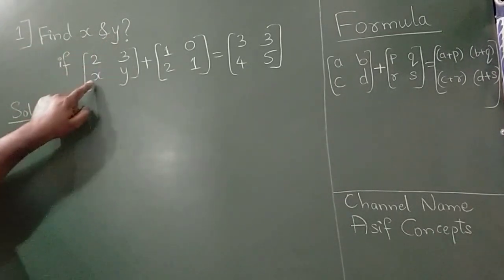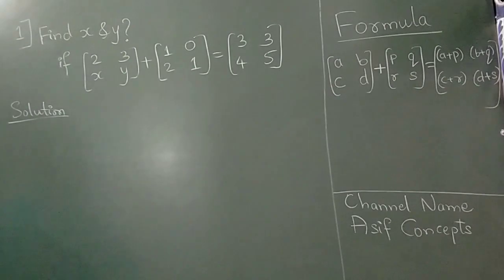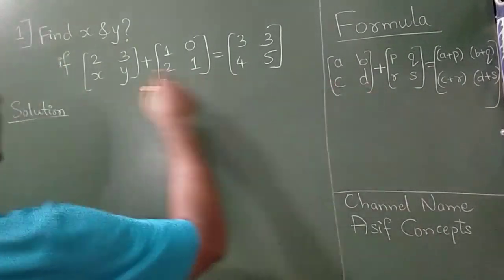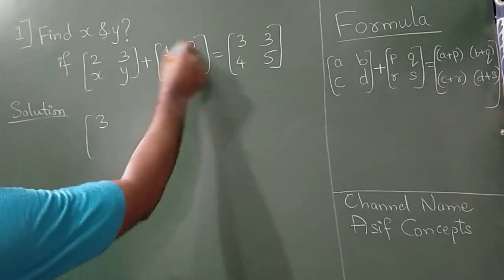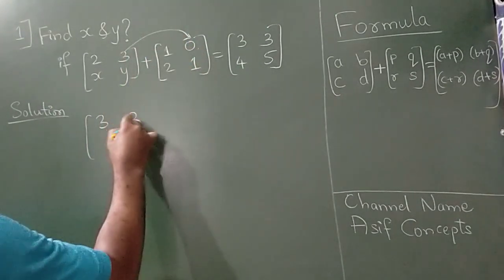Find x and y from the given matrix. Now, according to this formula, I can write this as 2 plus 1 is 3. 3 plus 0 corresponding elements is 3.